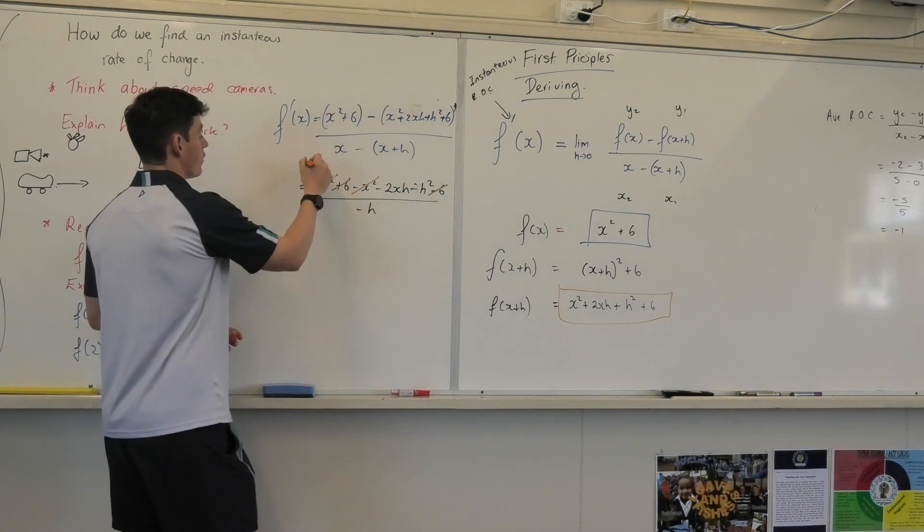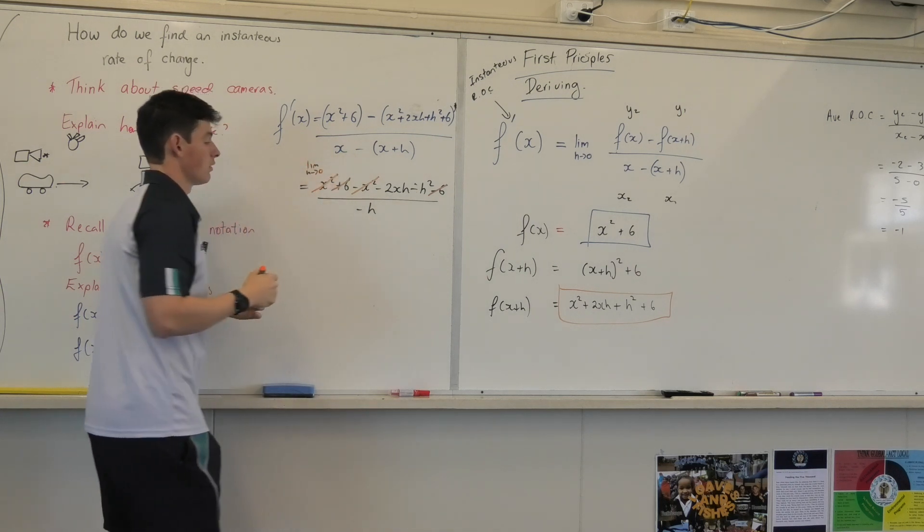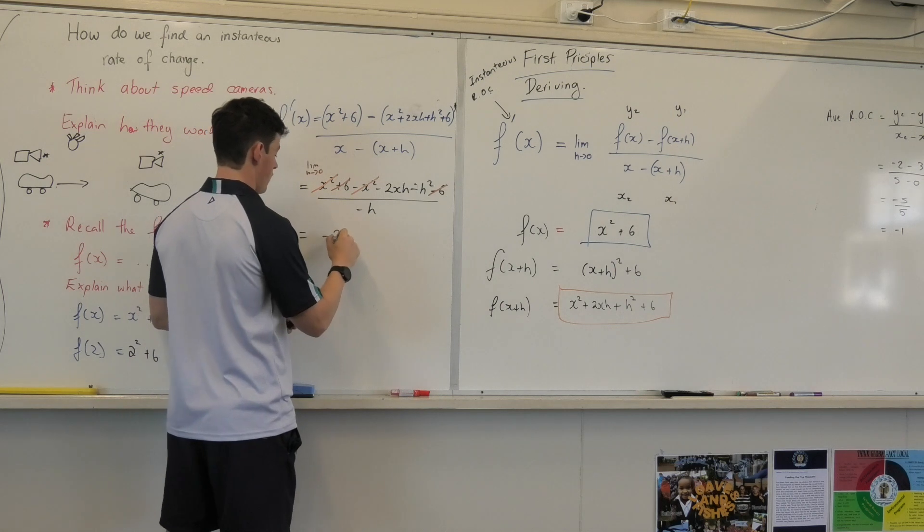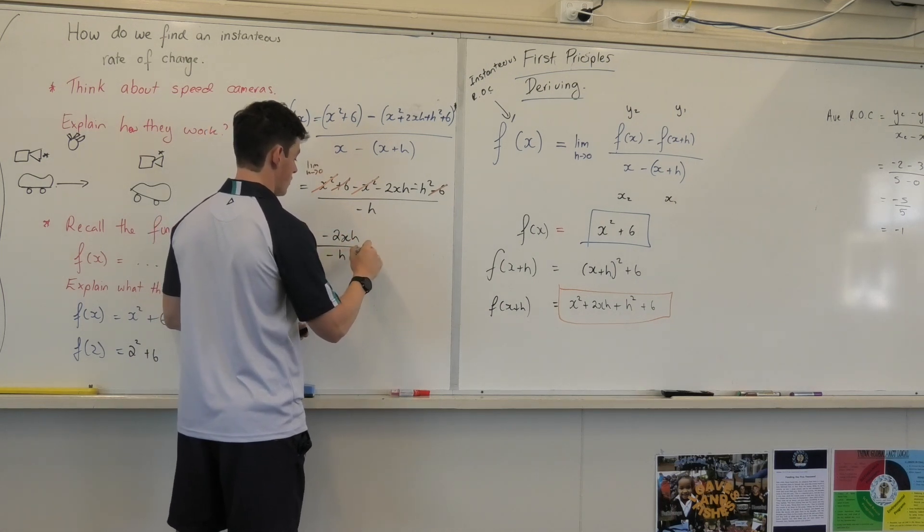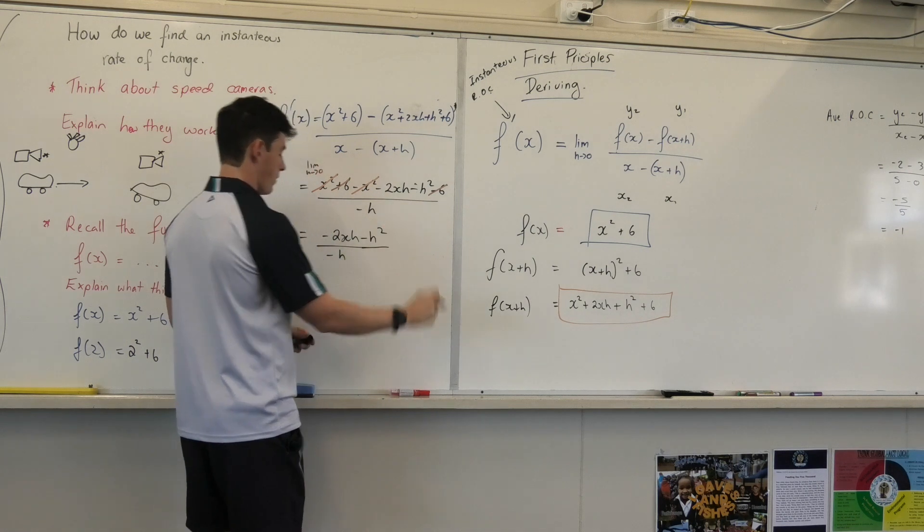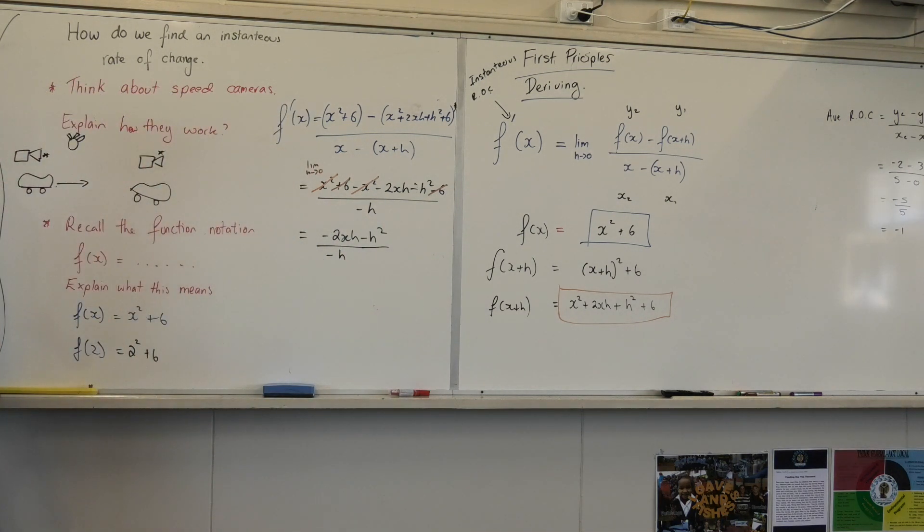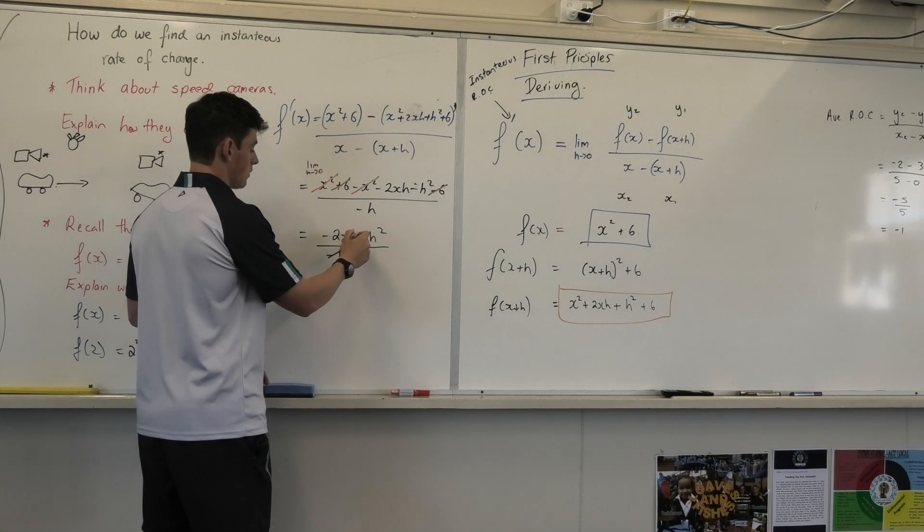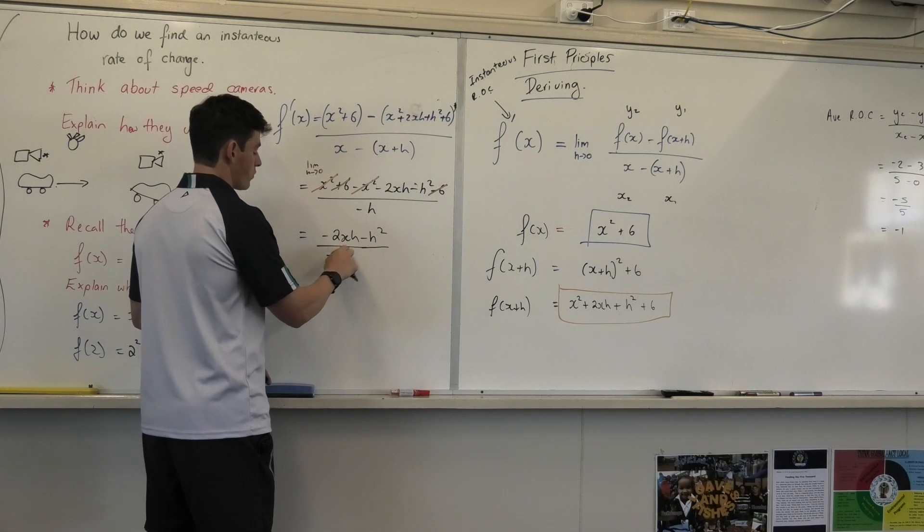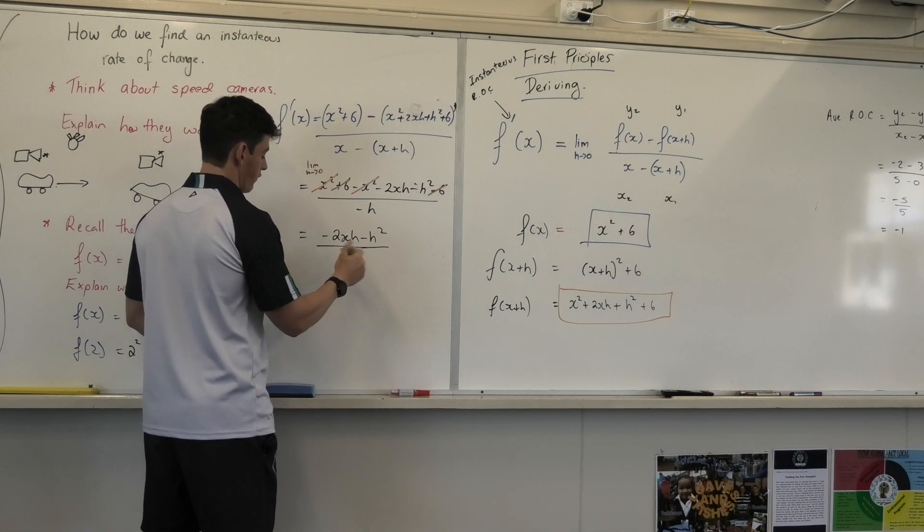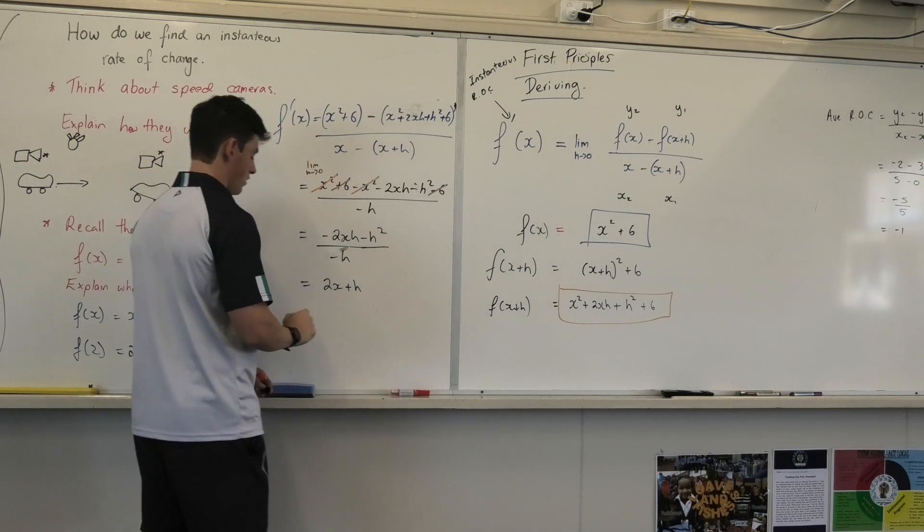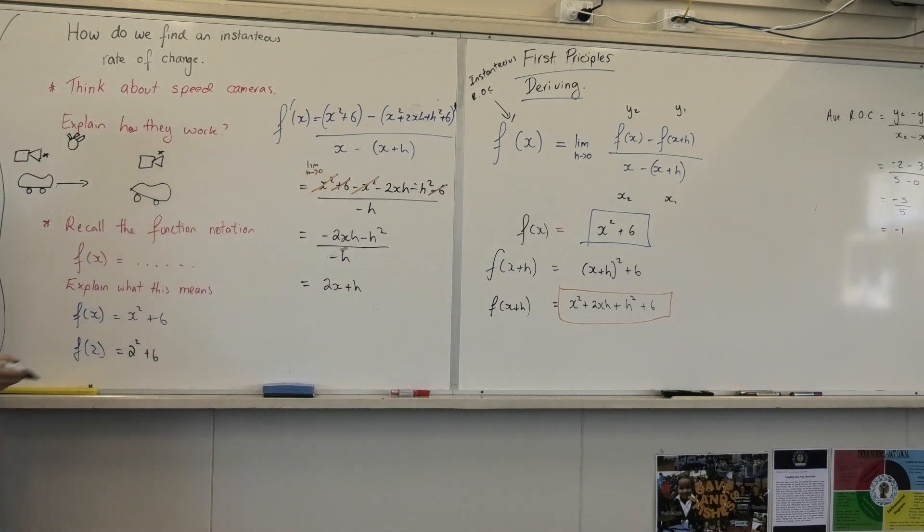Now remember, in all of this, I've got lim h approaches 0. So now I'm left with negative 2xh divided by negative h, minus h squared. What can I do now? I can get rid of the bottom h, can't I? So that cancels. I'll just rewrite the line rather than cancelling. So I'm going to get 2x plus h is f'(x).